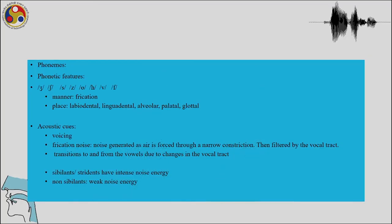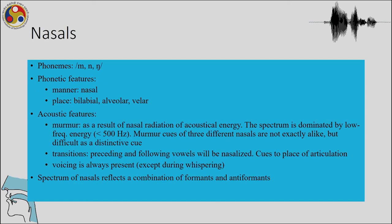Phonetic features like frication and acoustic cues like voicing and sibilance contribute a lot to the perception of sounds. Noise generated as air is forced through a narrow constriction for fricatives is filtered by the vocal tract. Transitions to and from vowels arise due to changes in the vocal tract. Sibilants have intense noise energy while non-sibilants are weak noise — this noise aspect stressed in the acoustics is also very important in perception.